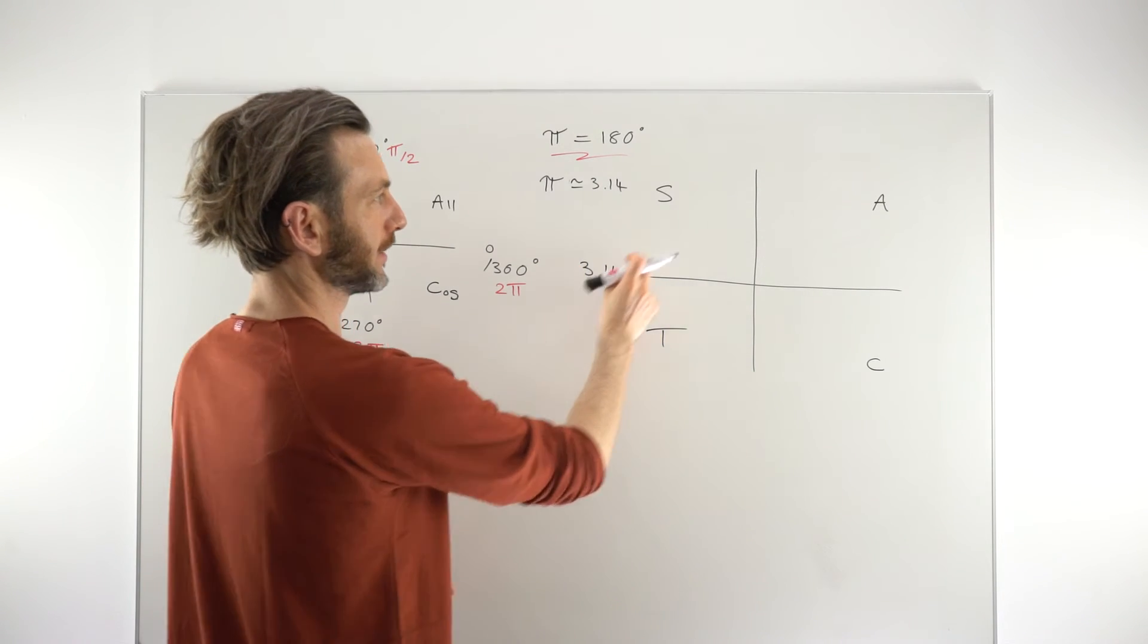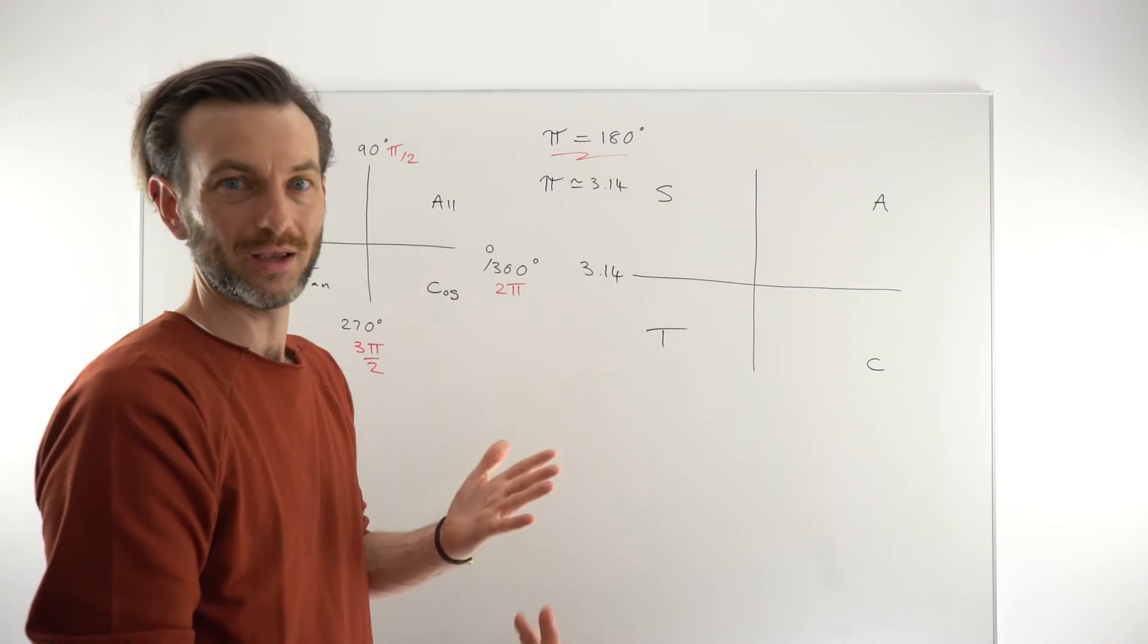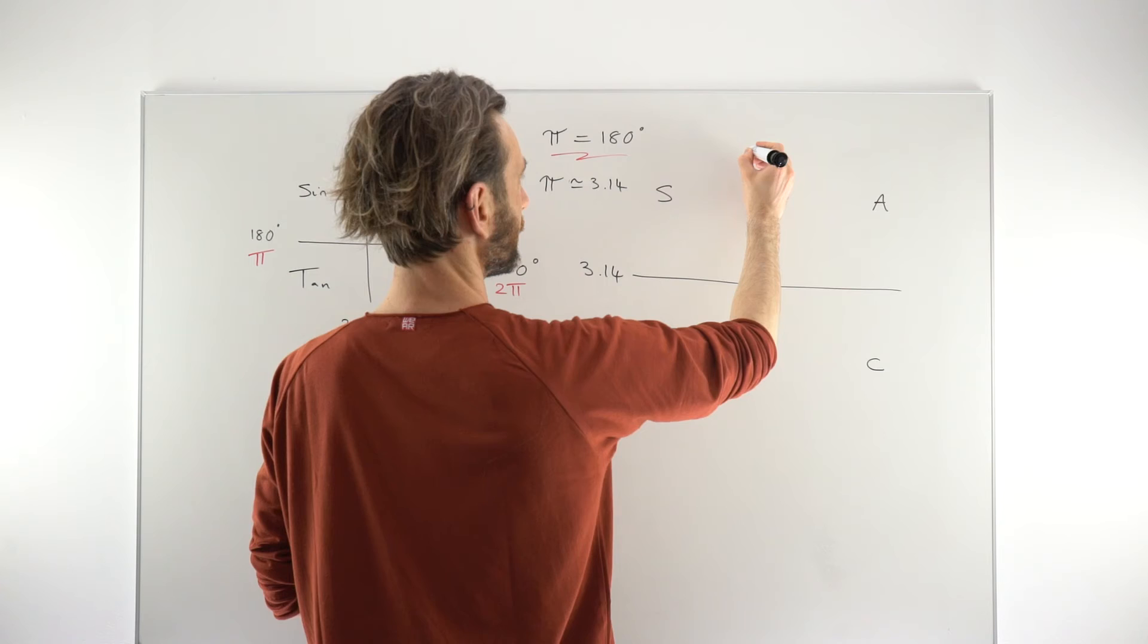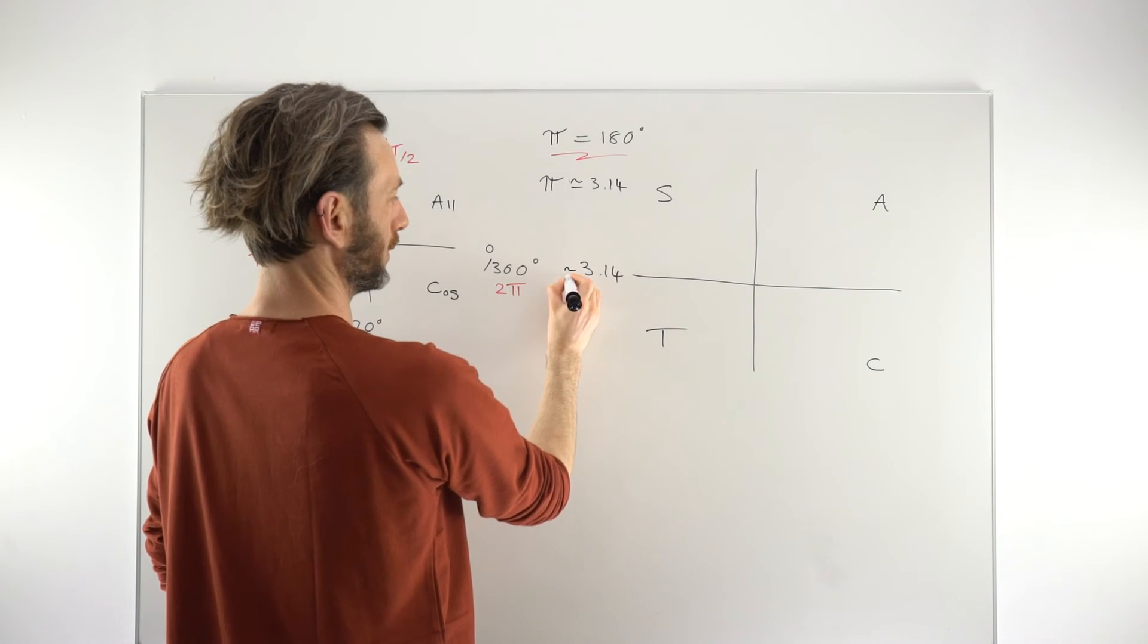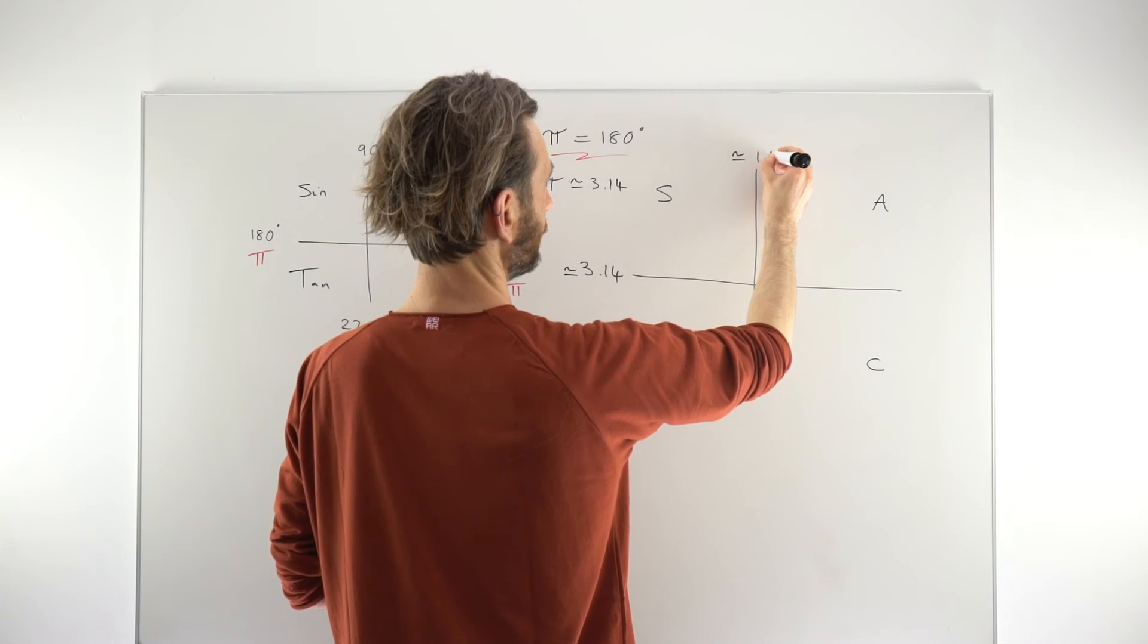That must mean then that this would be half of 3.14, which is roughly 1.5-ish, somewhere about there. So we can say this is approximately 3.14 radians. This would be approximately 1.5.